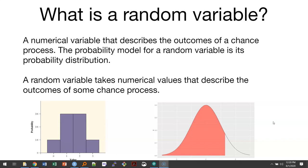We need to talk about random variables to know more about statistics. A random variable is a numerical variable that describes the outcomes of a chance process. When we talk about this, we'll understand that random variables are really all about probability.